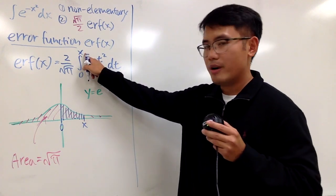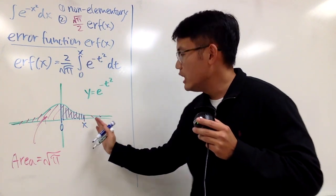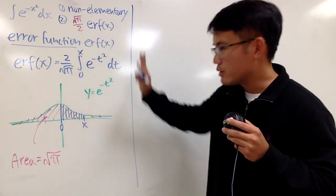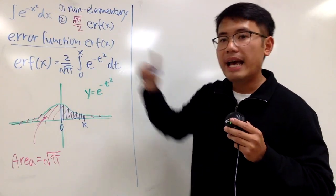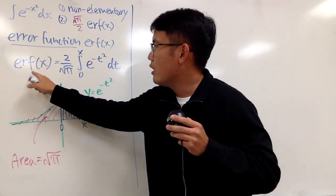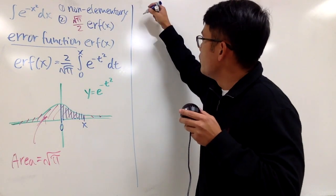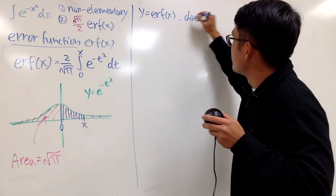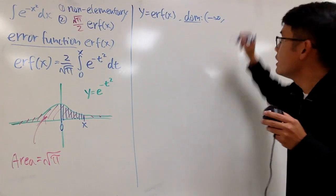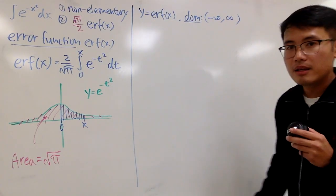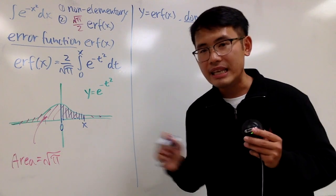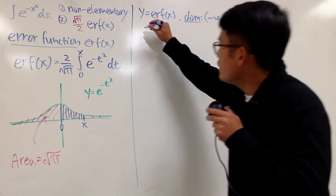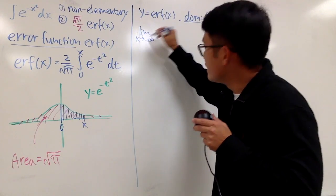First of all, x here can be positive or negative. If you go to the negative side, when you go from zero to some negative value, you can just flip the integral — it doesn't really matter that much. The main point is that x can be anything for erf of x. Therefore, if you want to talk about the graph of erf of x, first let's talk about the domain, which will be from negative infinity to positive infinity. We can plug in any x values we want. And secondly, let's find out the horizontal asymptotes.